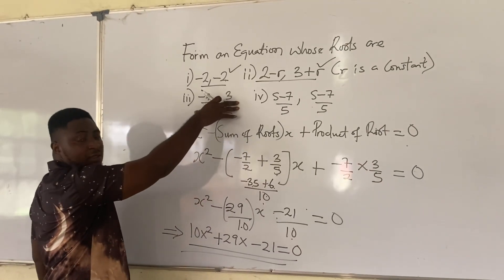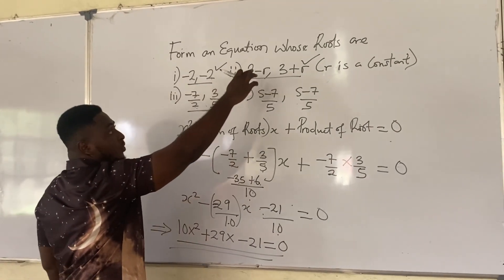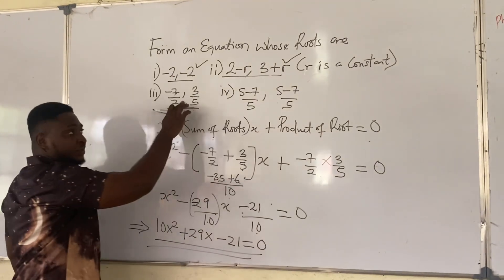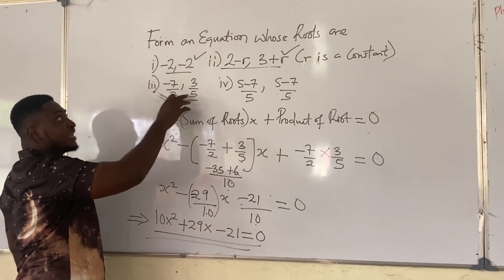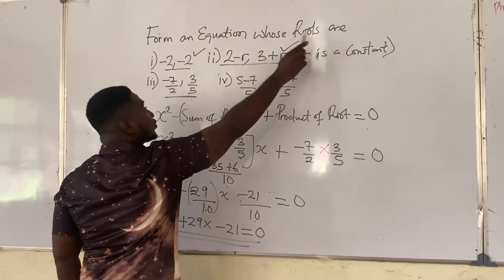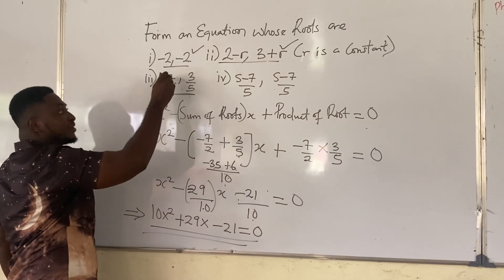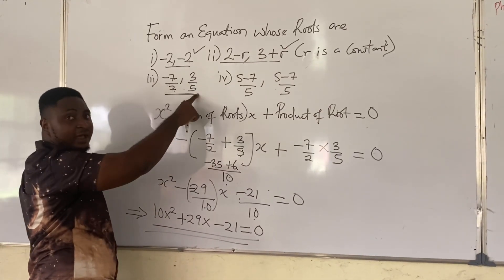So back to question 3. We have already done question 1, we've done question 2. Now we're in question 3. Now the same question they're asking us, they say form an equation whose roots are minus 7 over 2 and 3 over 5.